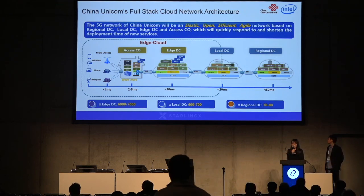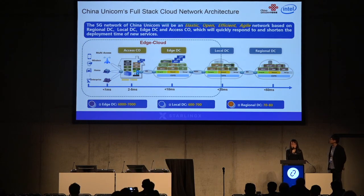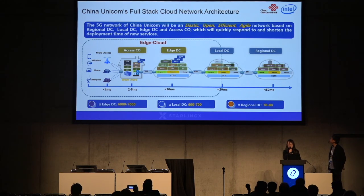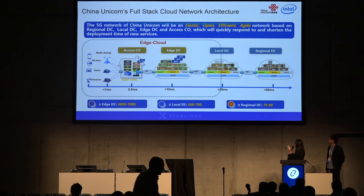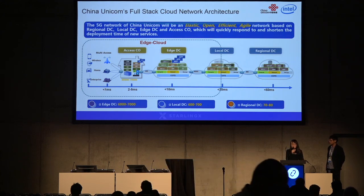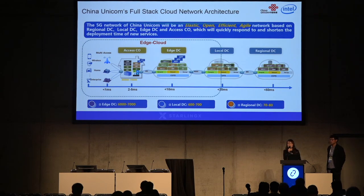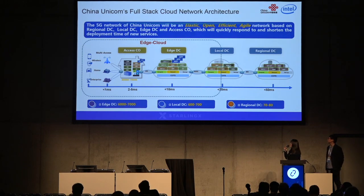To effectively meet the service requirements of eMBB, mMTC, and URLLC in our 5G network and to enhance industrial competitiveness, almost all global telecom operators have started network reconstruction and transformation aiming to establish DC-centric new networks. As shown in this picture, the 5G network of China Unicom will be an elastic network based on a three-layer DC — regional DC, local DC, and IDC — which will quickly respond to and shorten the deployment time of new services. Throughout 2020 to 2022, China Unicom will construct 70 to 80 regional DCs, 600 to 700 local DCs, and more than 6,000 IDCs with new management and business models.